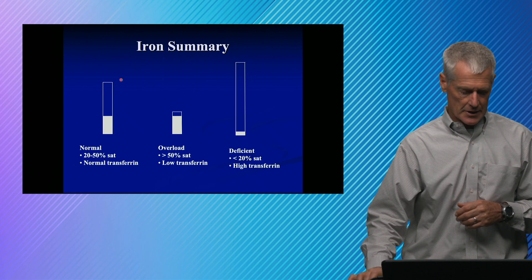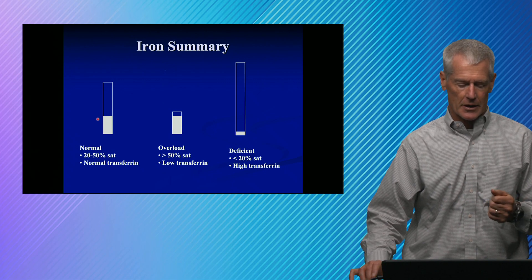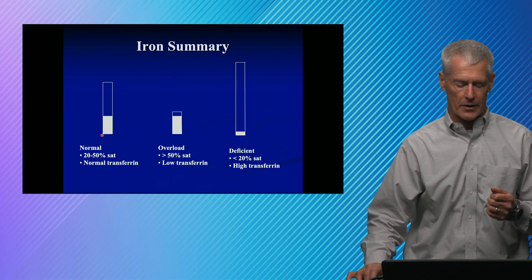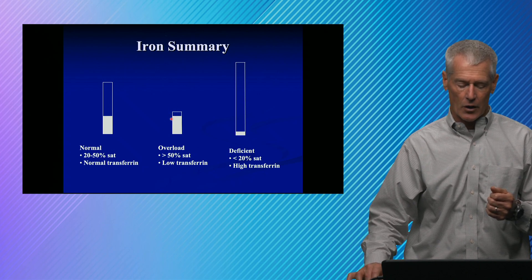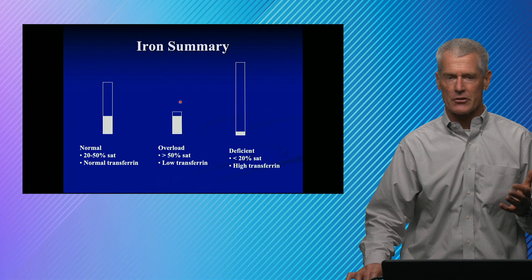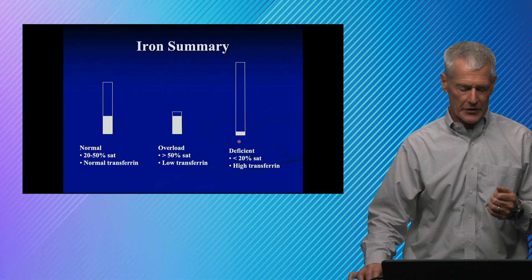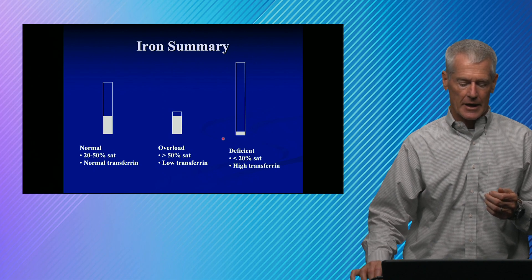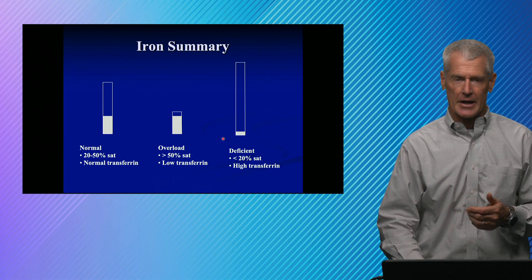This is really the take-home summary. A normal person has a normal transferrin, about 30 to 50 percent saturation. If you're overloaded, transferrin gets down-regulated but your percent saturation is high — over 50 percent — even though the serum iron might not be that high; the percent saturation is high and transferrin is low. In iron deficiency, you've got very low saturation, maybe two to five percent, transferrin has been up-regulated, and percent saturation is low. A really useful summary for understanding iron studies.